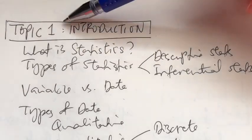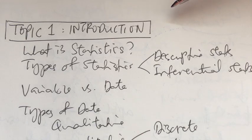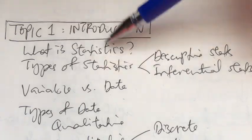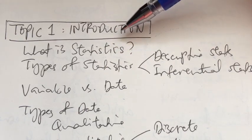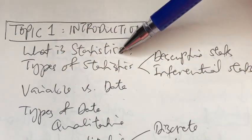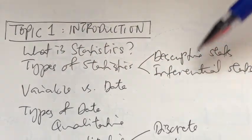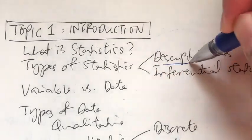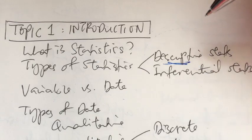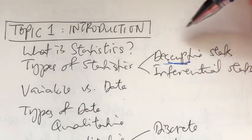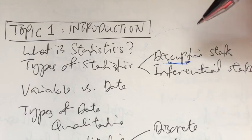Let's begin with Topic One: Introduction to Statistics. We began our course with the definition of statistics. We also learned why it is important for us to learn this particular subject, and then we learned about the different types of statistics. Statistics is divided into two types. One is called descriptive statistics — the root word 'describe' — meaning we describe our data, summarize it, and present it in such a way that makes sense to our audience.